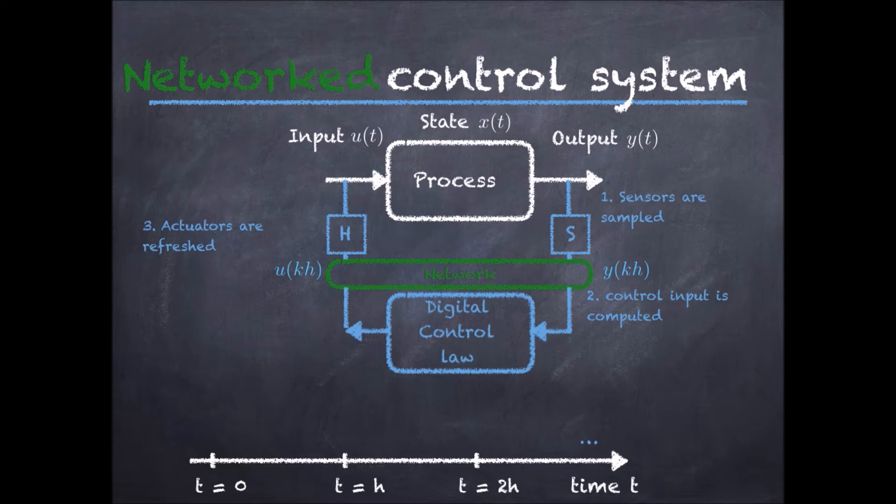Let us have a new look at how this process happens over time. Say at time 0, the sensors are sampled, but now they have to be transmitted over the network to the remote controller. This happens only after a delay, which we cannot neglect now.